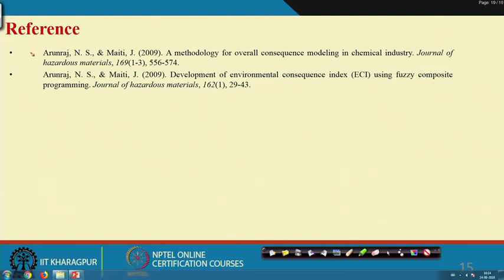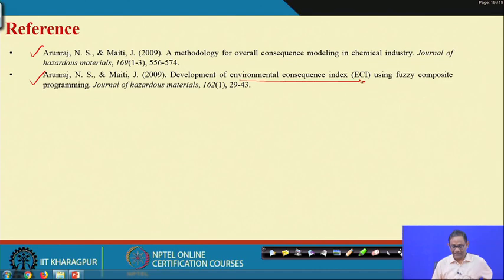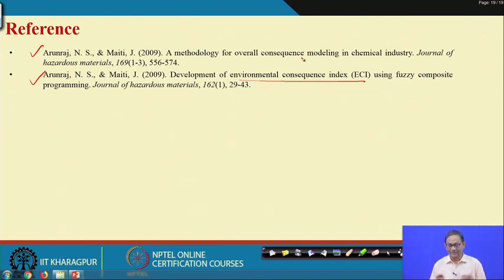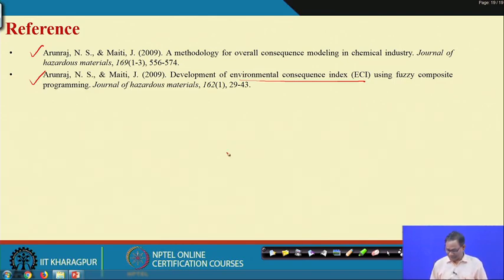Two papers are referenced — both authored by myself. The second one on environmental consequence index considers all factors: material properties, spreading properties, and all indices given in the appendix with their references. The first paper, which I have presented here in summary, covers the overall consequence methodology. If you want a better assessment, you may go through the papers to find more information, as we have used simulation and other techniques to quantify overall consequences with reference to a chemical plant. Thank you very much.